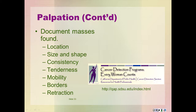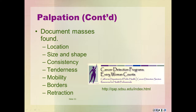Describe any breast mass or lump using the following characteristics: location, using clock positions and distance from the nipple; size, in centimeters including length, width, and thickness; shape, whether round, discoid, lobular, stellate, regular, or irregular; consistency, firm, soft, or hard; tenderness; mobility, whether movable in what directions or fixed to overlying skin or subjacent fascia; borders, whether discreet or poorly defined; and retraction, the presence or absence of dimpling and altered contour. All new, solitary, or dominant masses must be investigated for further diagnostic testing.